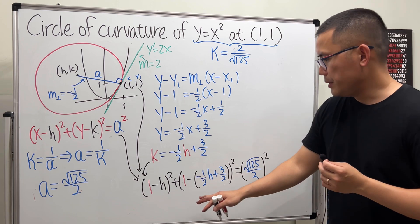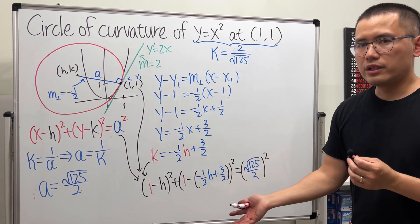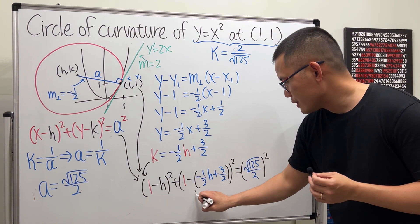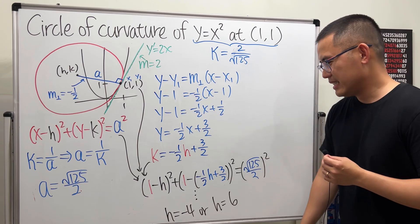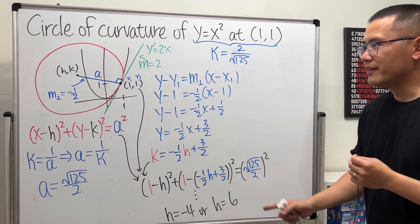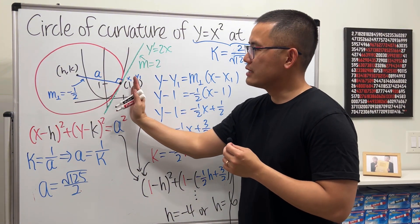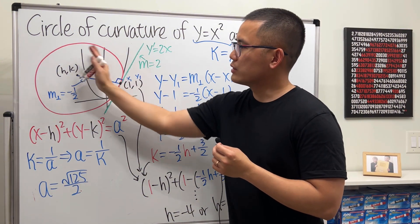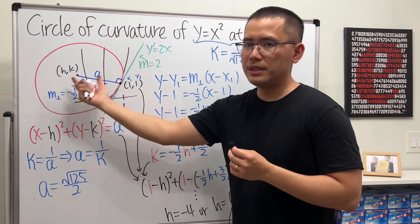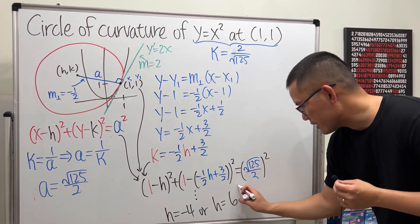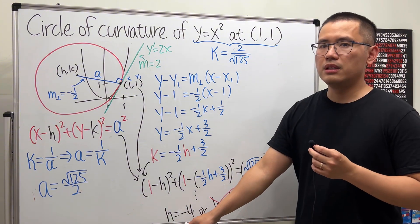I'm just going to tell you guys which one though. Now this is the time that we have to take a look at the picture. As you can see, the circle is to the left, right? So h has to be a negative number. So not this one. h has to be negative 4.